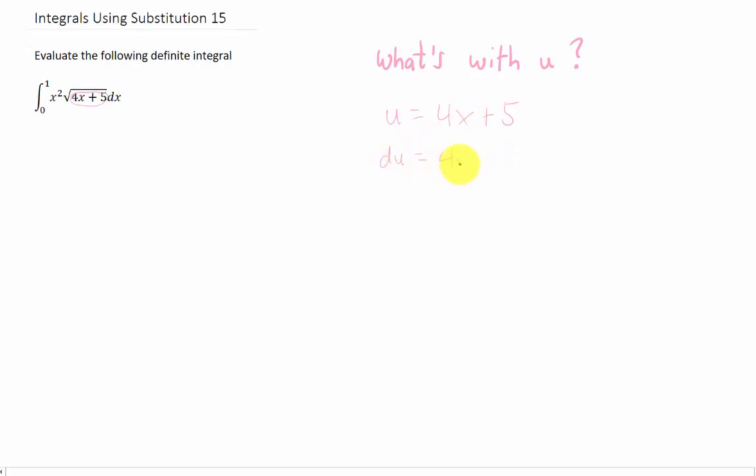That makes our du 4dx, or in other words, that makes our dx 1 4th du. Well, that's pretty good. We can rewrite this square root of 4x plus 5 as the square root of u, and this dx we can rewrite as a 1 4th du, but we still have this x squared sitting in this integral. Is there a way that we can get rid of it?